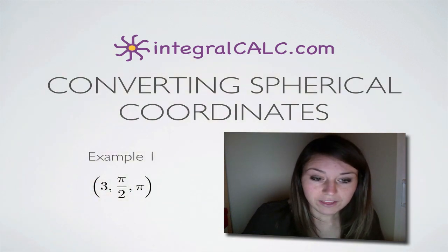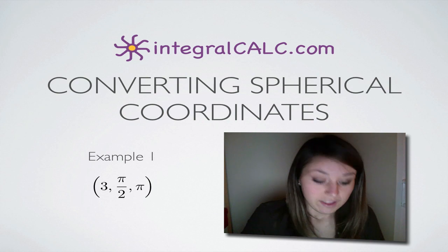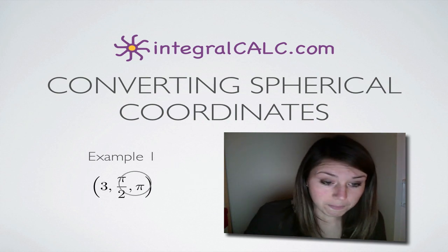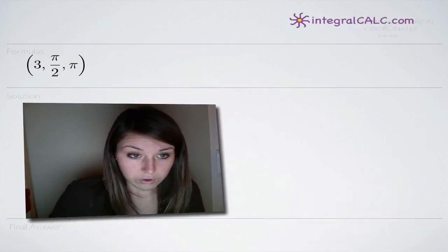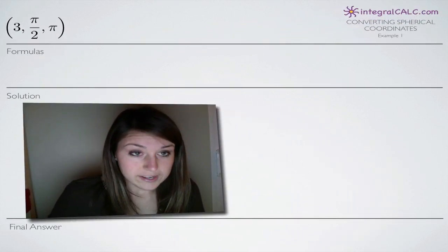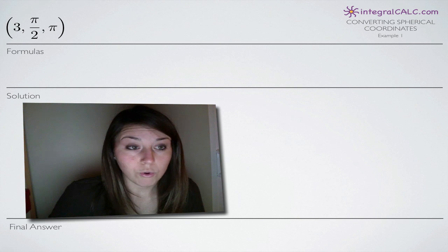In this case, we're going to be converting them to cylindrical coordinates. The spherical coordinates that we're given are (3, π/2, π), and we're going to take that and convert it to a cylindrical coordinate.